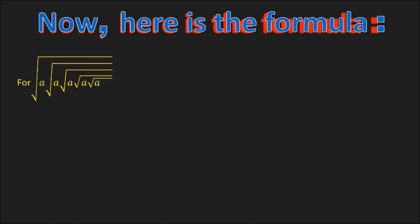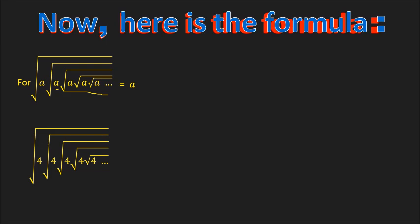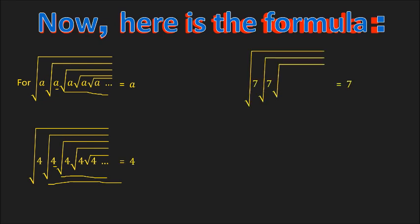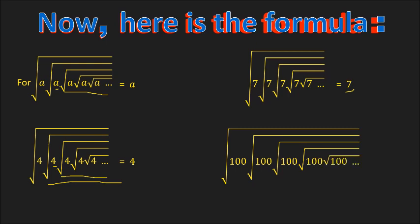Here is the formula for Case 1. For any number A, the square root of A times the square root of A times the square root of A, repeated infinitely, is simply A. So therefore, the square root of 4 times the square root of 4 repeated infinitely is just 4. The square root of 7 times 7 repeated infinitely is just 7. Or the square root of 100 times 100 repeated infinitely is just 100.